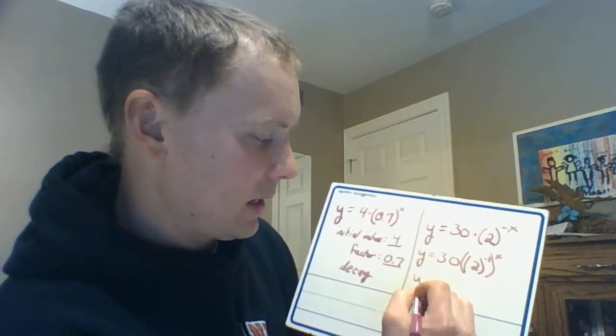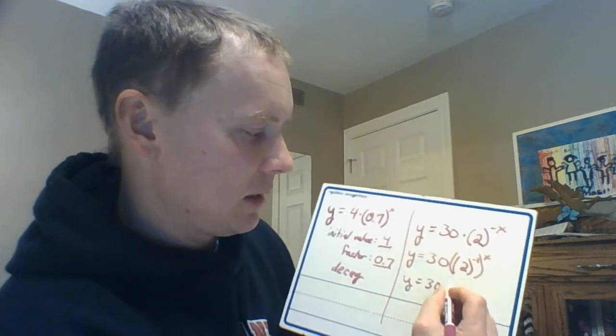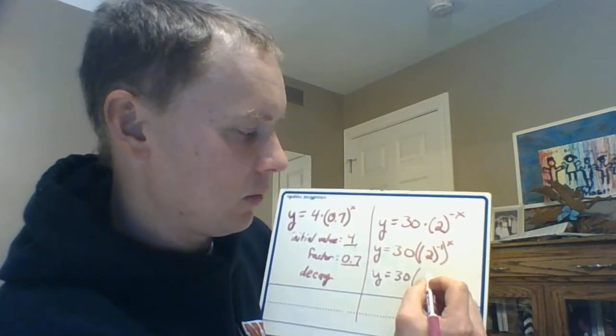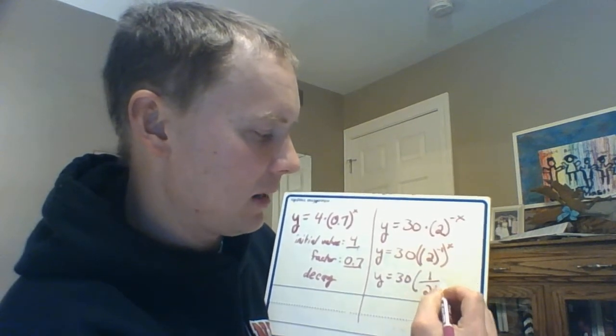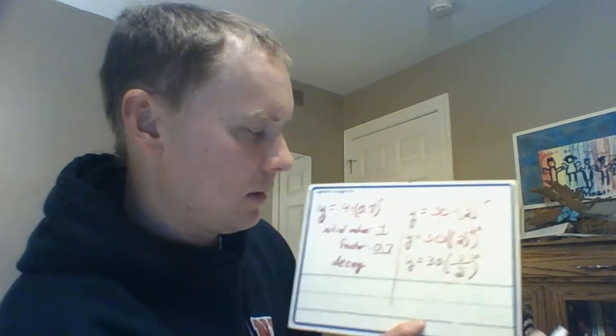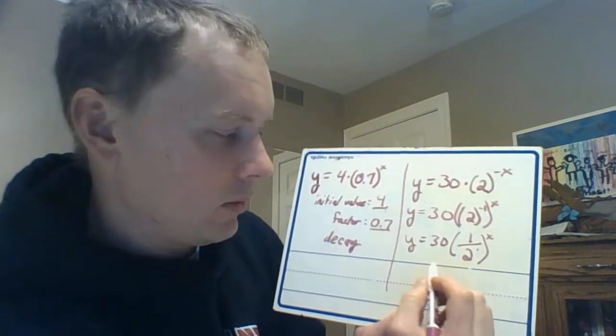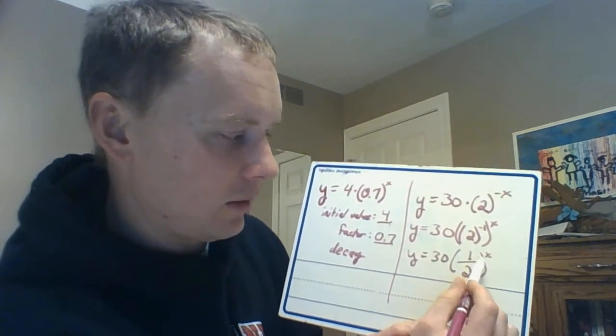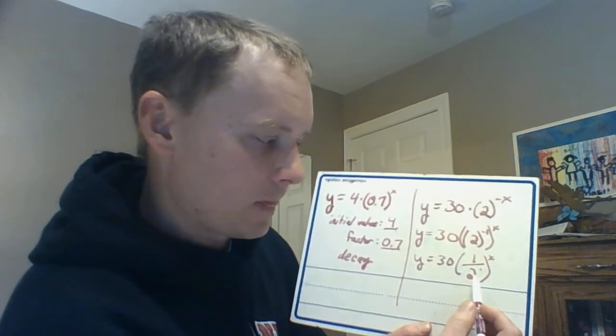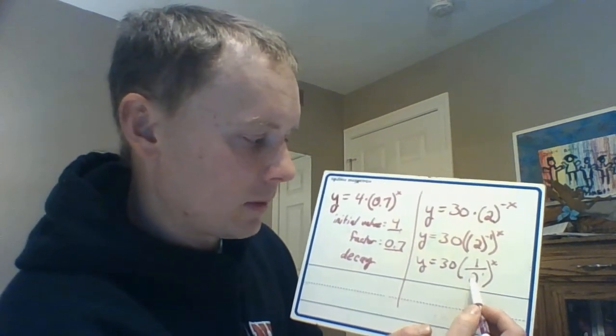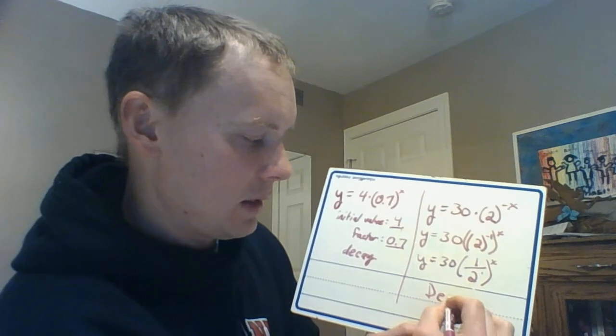If we thought about it this way, now anything to the negative 1 power, that means that we could move it to the denominator to make it positive like that. And so now it's pretty clear that in this case, because that factor value is less than 1, this is going to represent a decay situation.